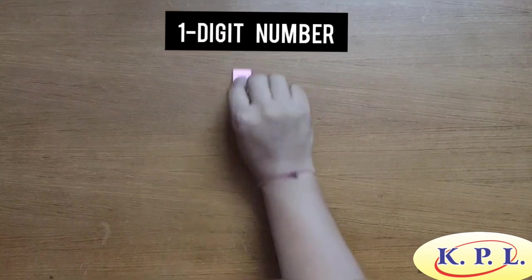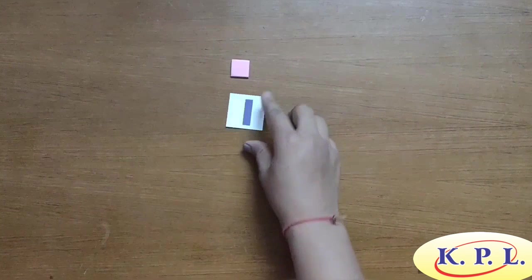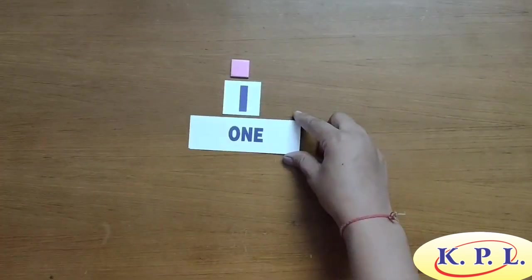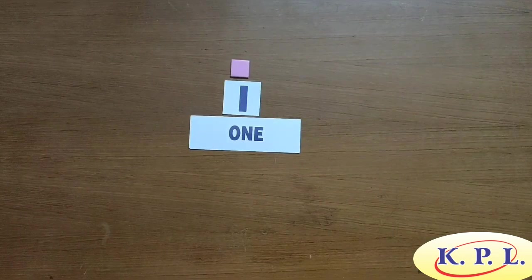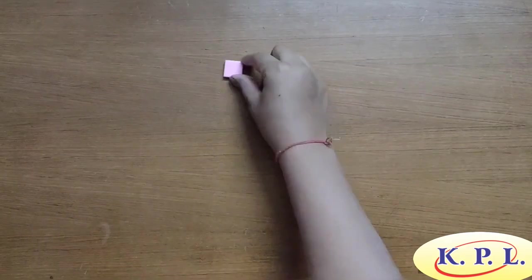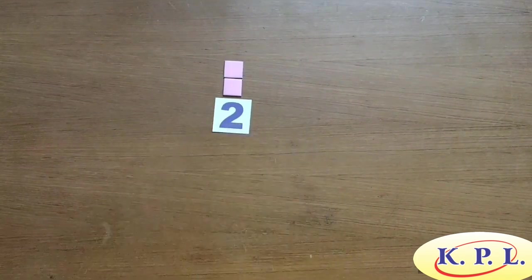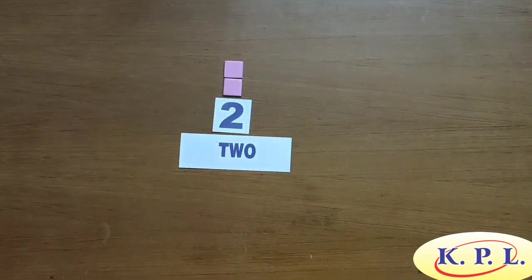One digit number. This unit represents digit 1 at the 1's place. This is digit 1. In words, it is represented as O-N-E, 1. These units represent digit 2 at the 1's place. This is digit 2. In words, it is represented as T-W-O, 2.